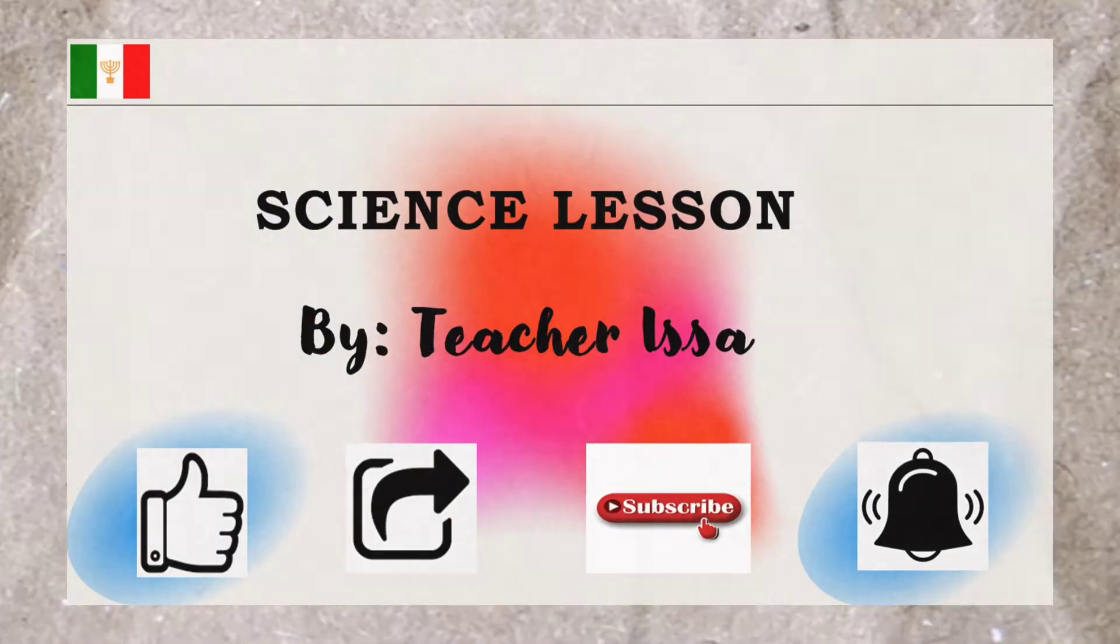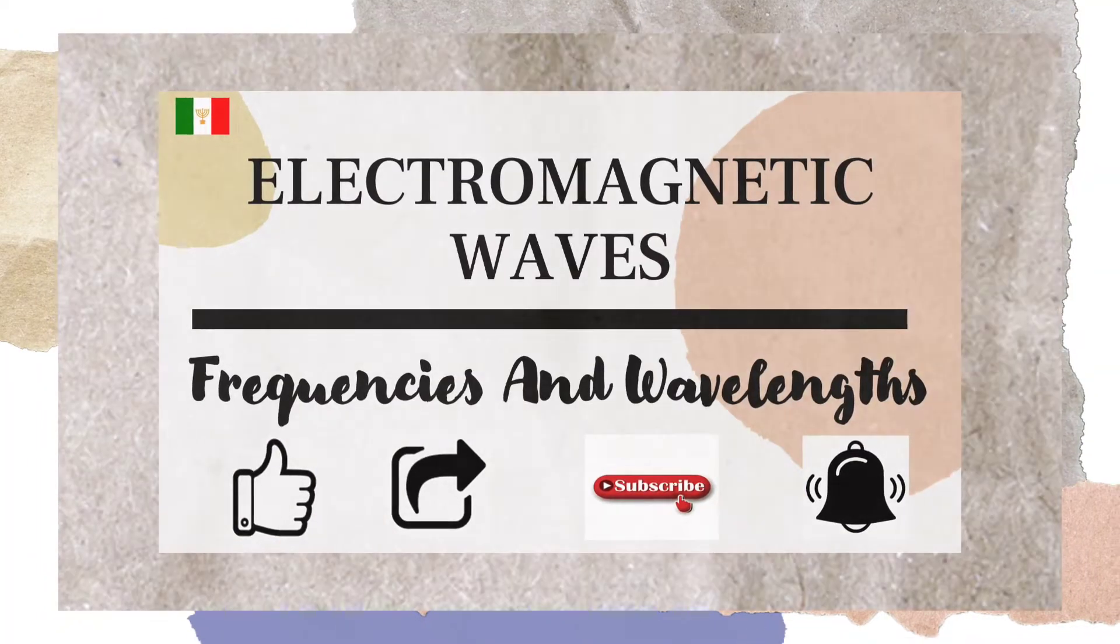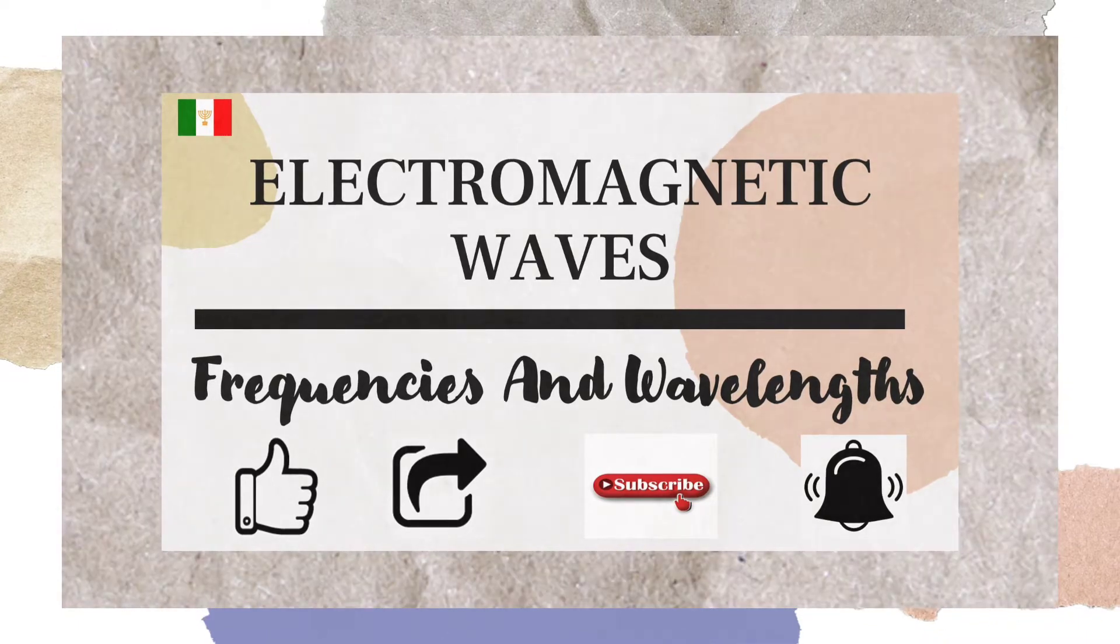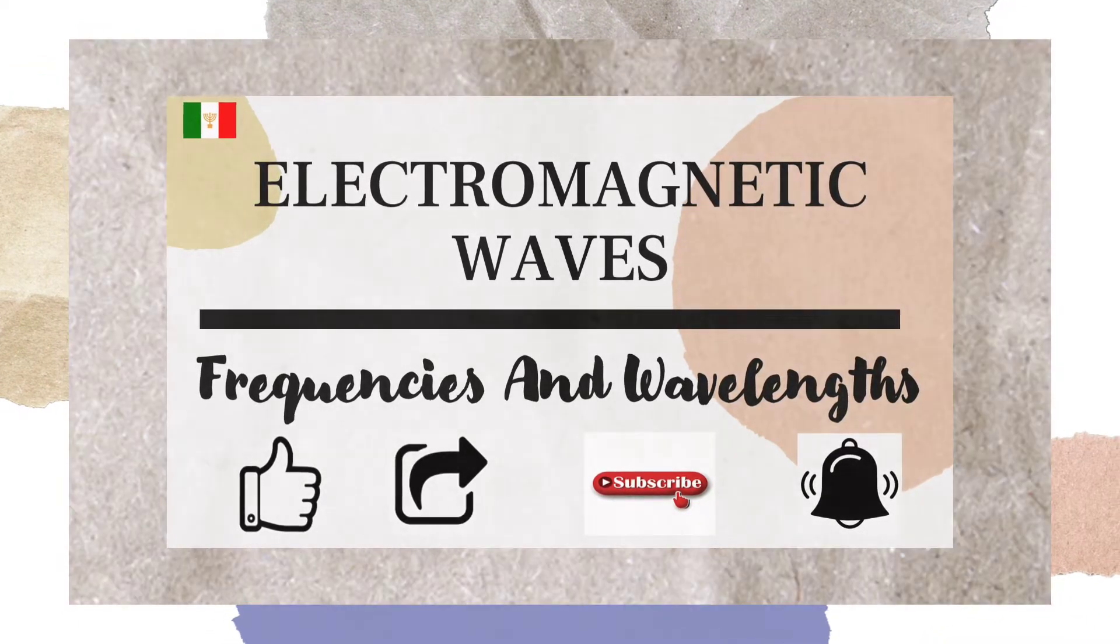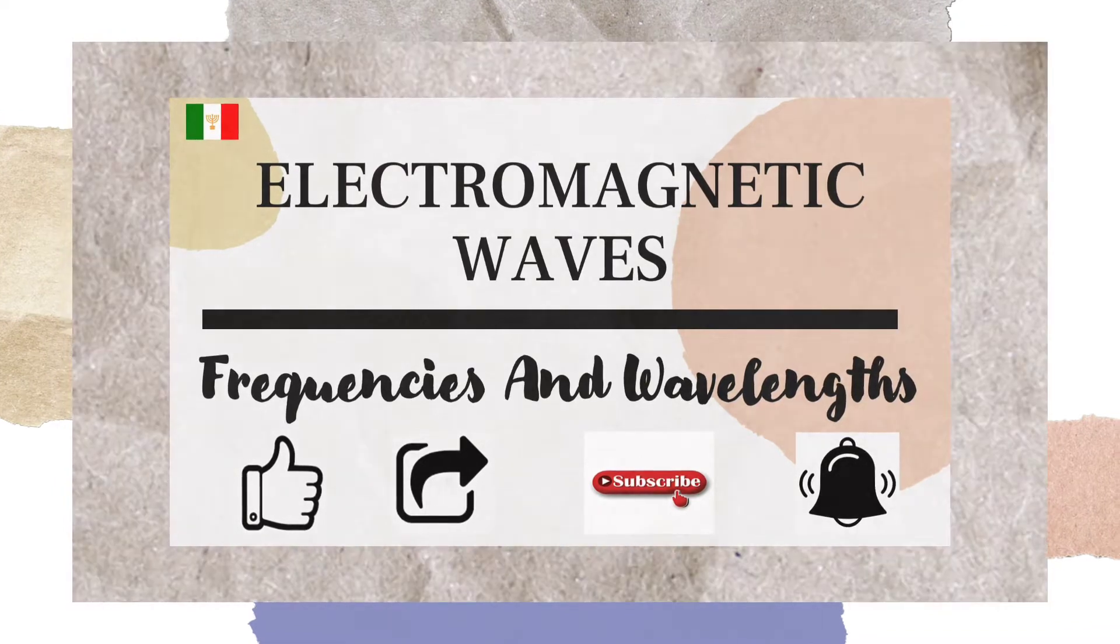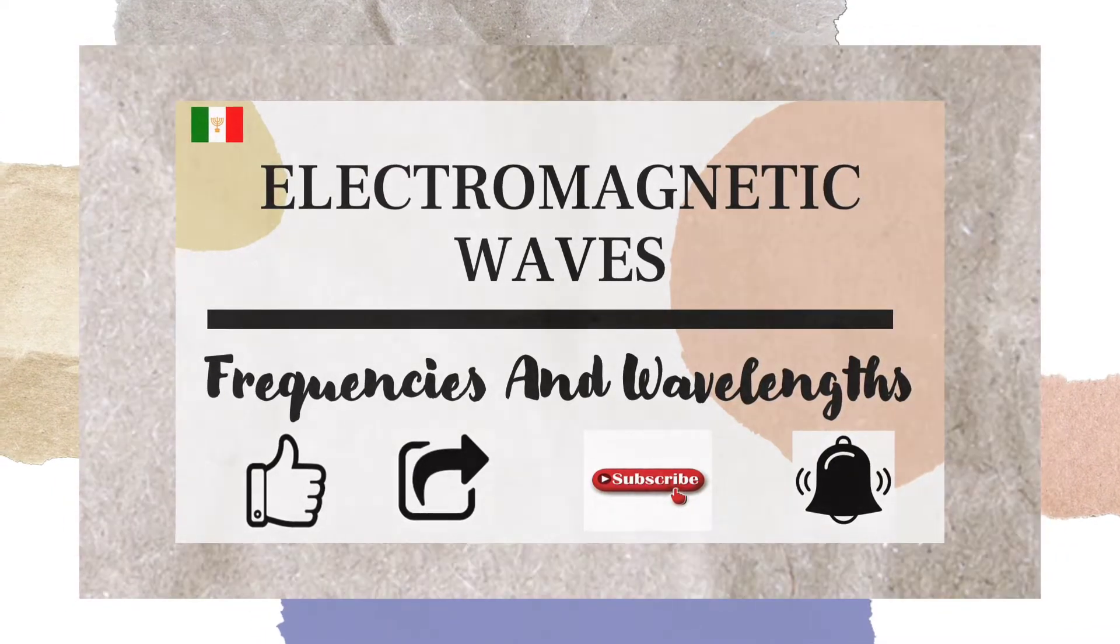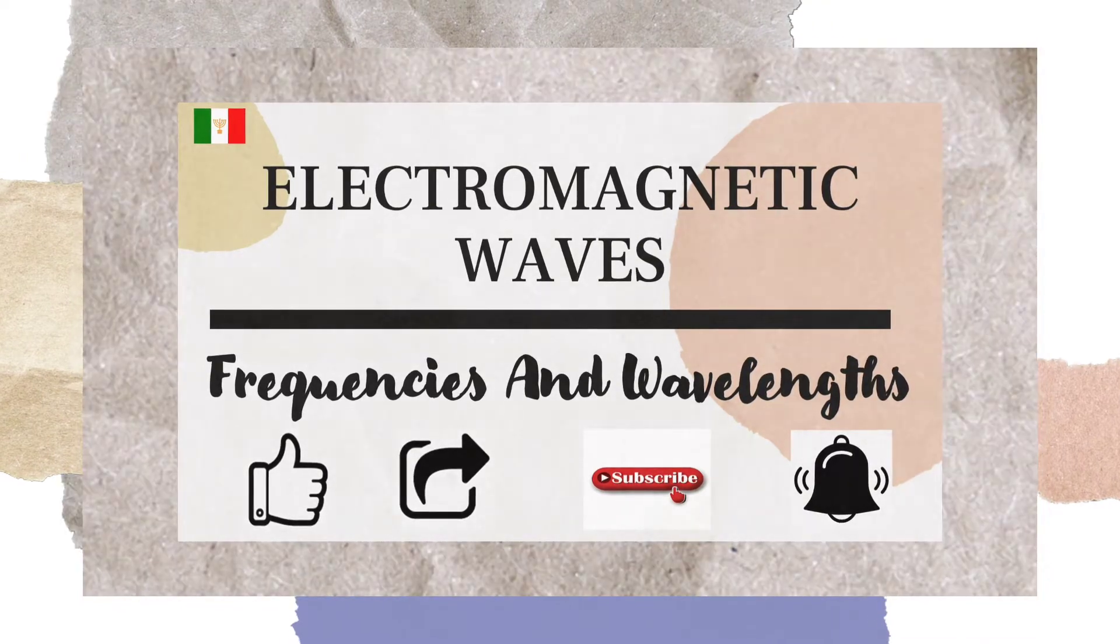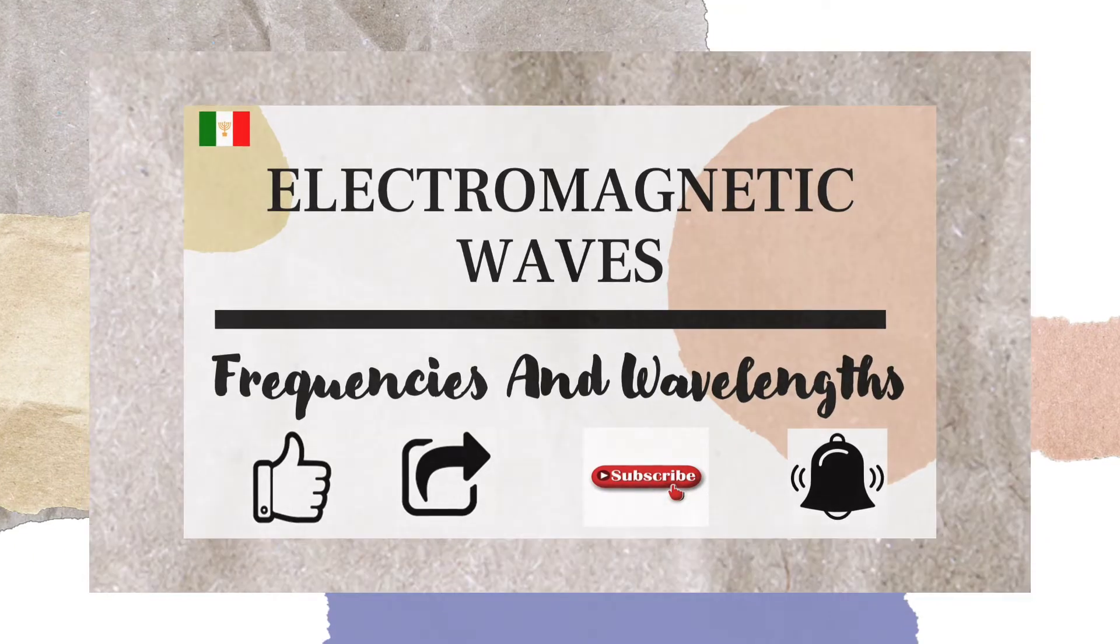In this lesson, you will learn about the characteristics of electromagnetic waves. You will also find here their physical wave features, such as frequency and wavelength. Moreover, this lesson enables you to gain more information on how the different types of electromagnetic waves are arranged.